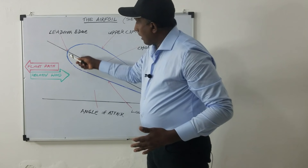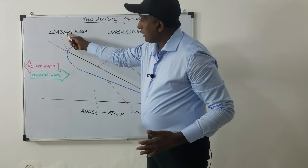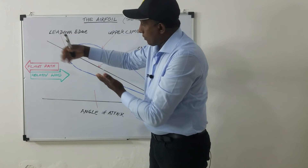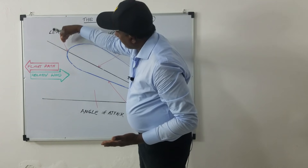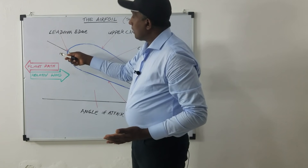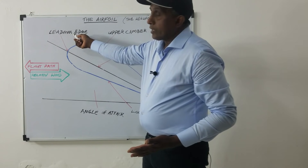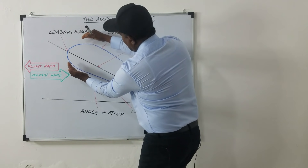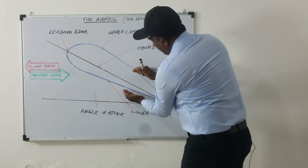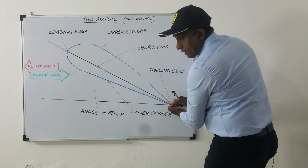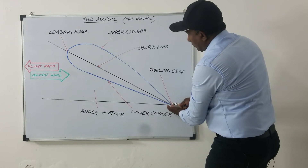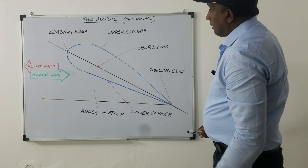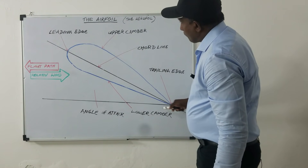The part of the airfoil that meets the airflow first is called the leading edge — this is the most forward point. The airfoil air meets the leading edge and moves above and below the wing, rejoining at the end point. This meeting point is called the trailing edge. The trailing edge is the portion of the aerofoil where airflow over the upper surface rejoins the lower surface.